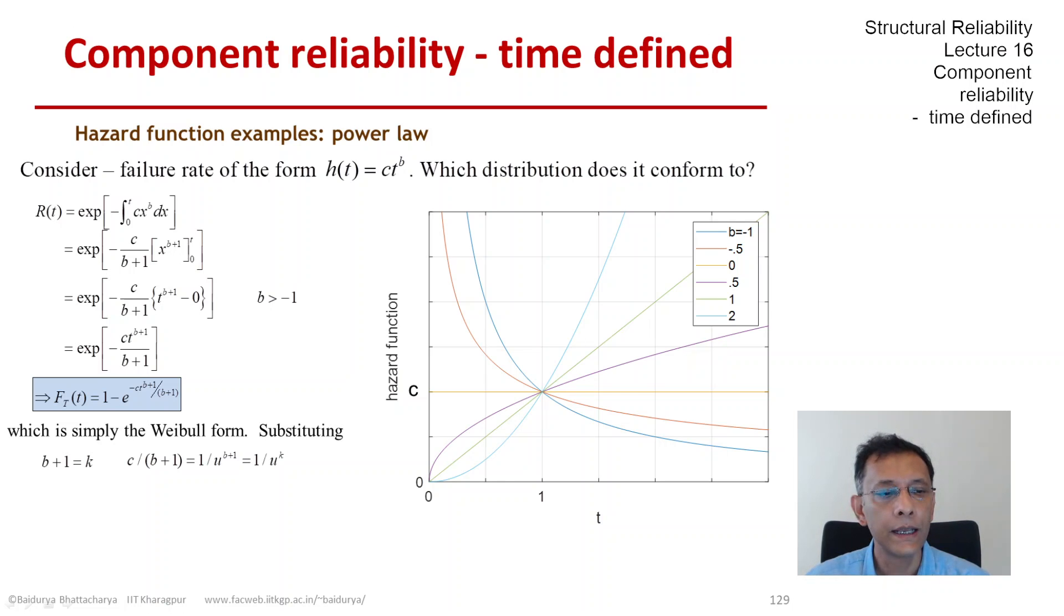That clearly looks like the Weibull form, which is 1 minus exponential of negative (t over u) to the power of k. That's what we've seen before, the two-parameter Weibull that we've identified in the past. That is the relationship between the hazard function form and the CDF form.